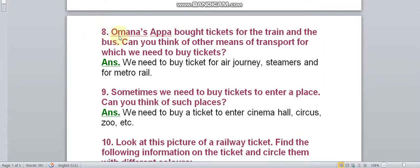Question 8: Omana's appa bought tickets for the train and the bus. Can you think of other means of transport for which we need to buy tickets? Answer: We need to buy tickets for air journey, steamers and for metro rail.